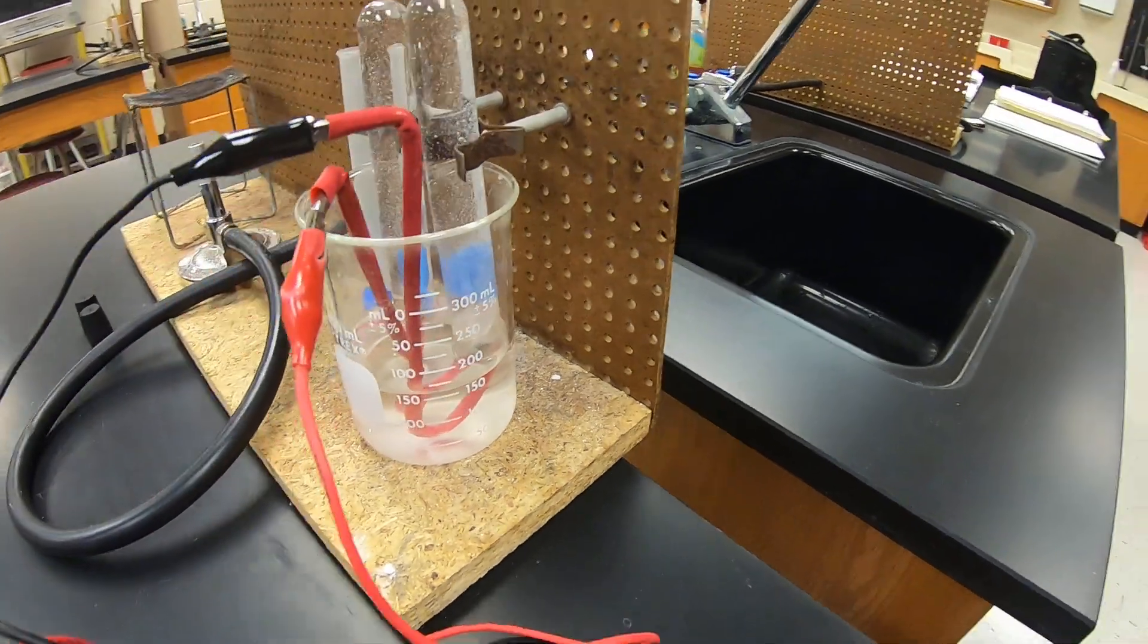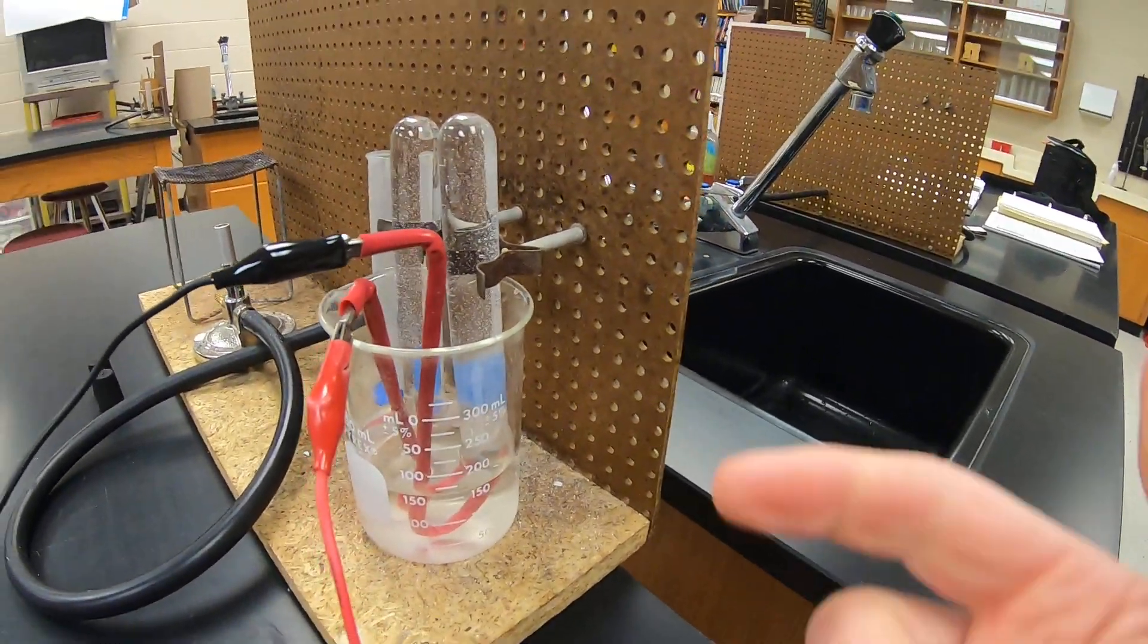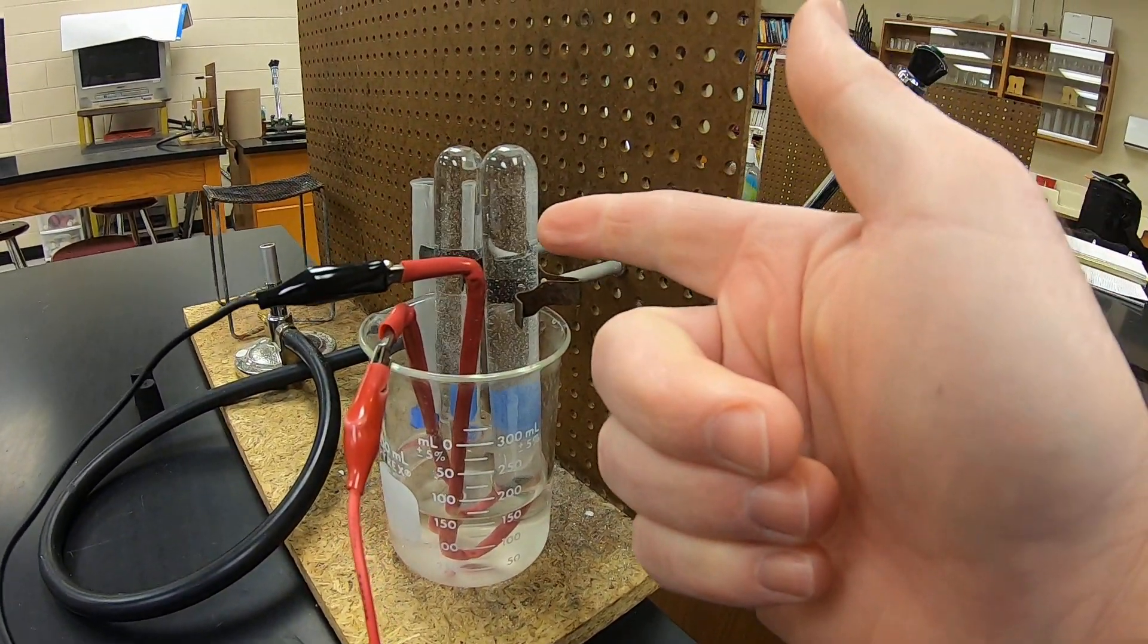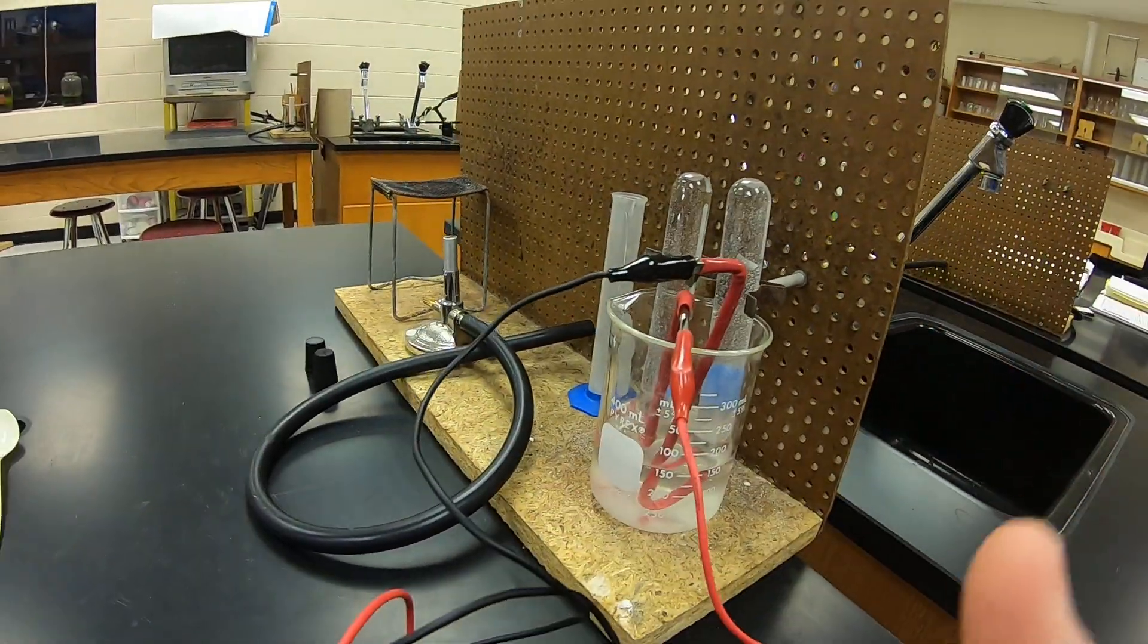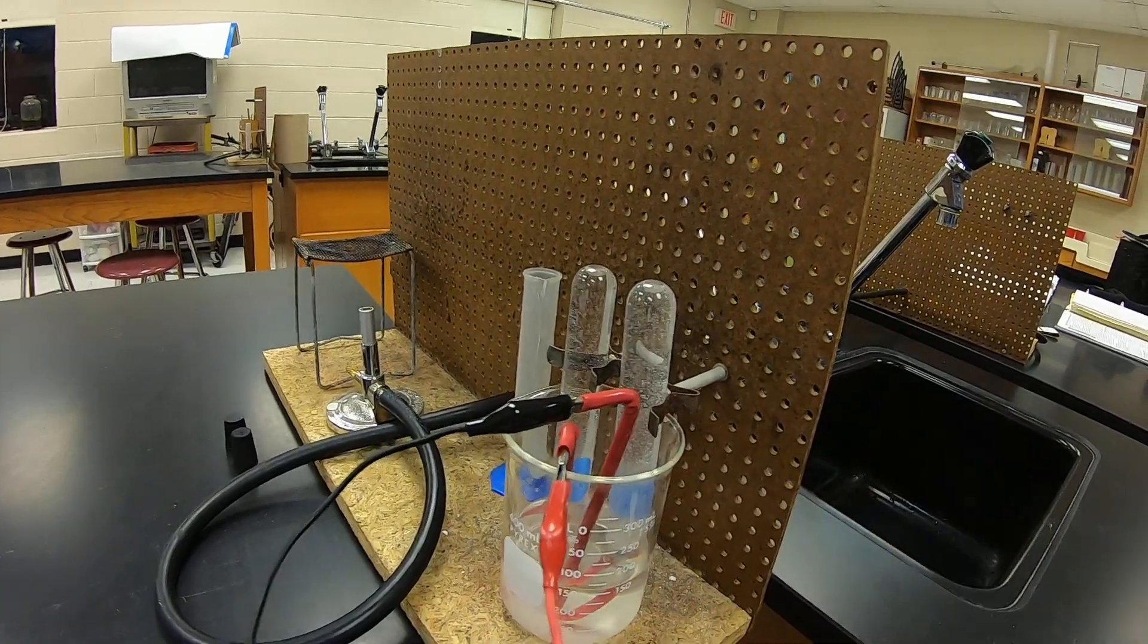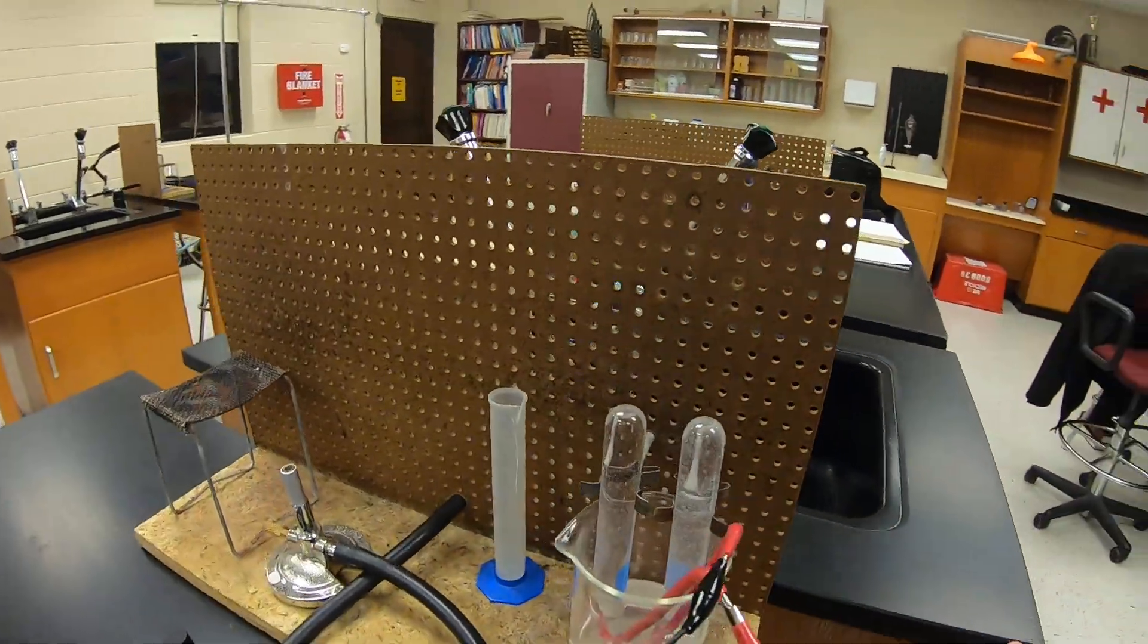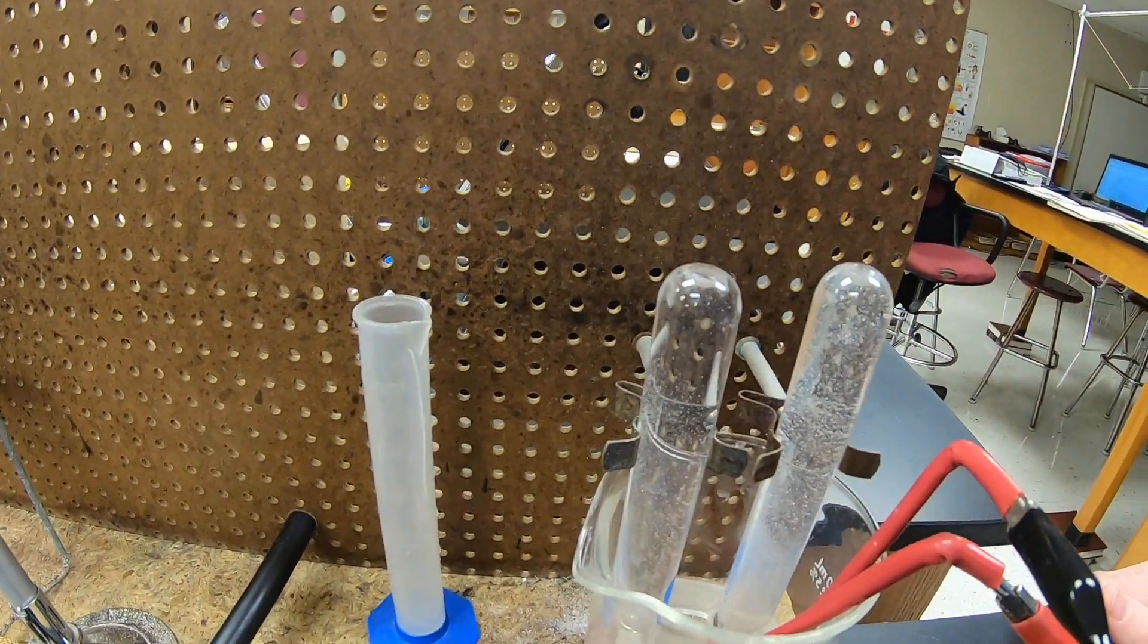And one thing that you'll notice, I'm not sure how well you'll see it on the video, but this side over here, the negative electrode, the black wire, is going a lot faster than this side over here with the positive electrode.